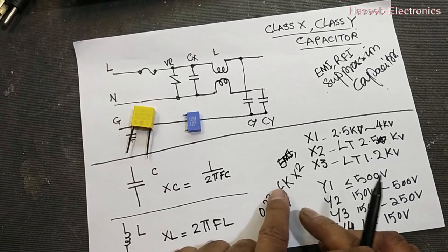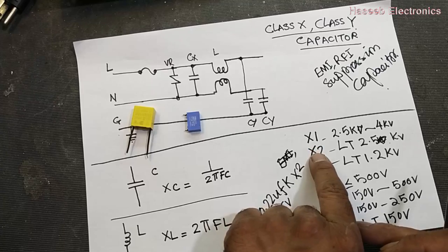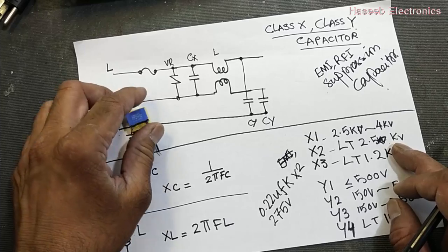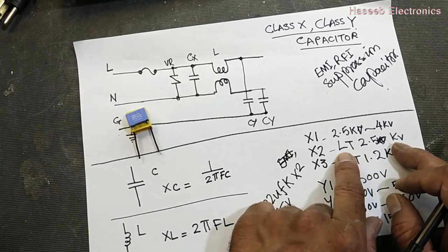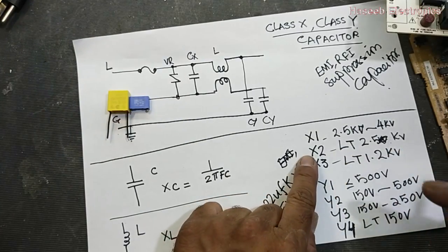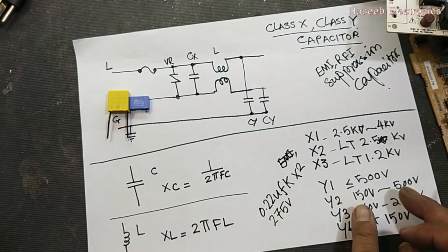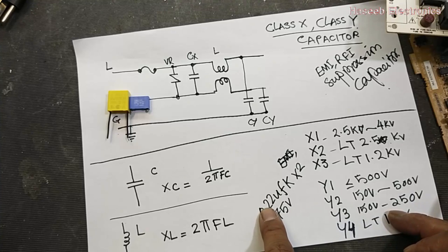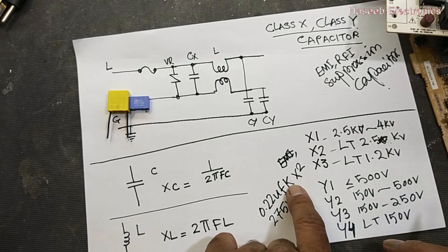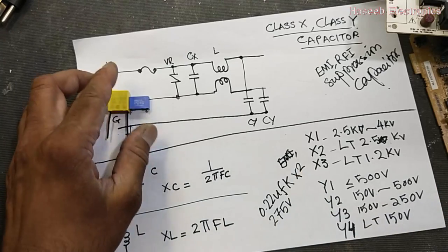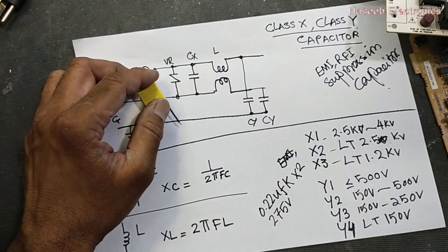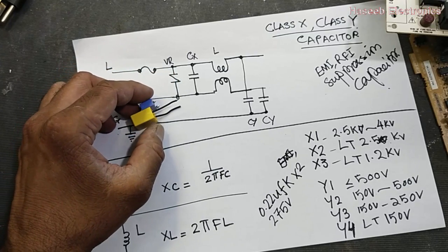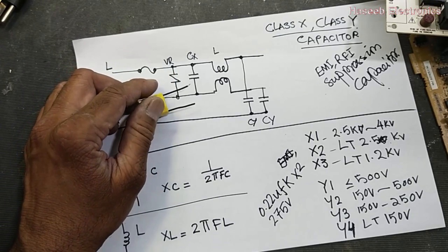So class X or class Y capacitors have a peak impulse voltage rating, capacitance, operating voltage, and tolerance category. Friends, I hope this video is informative. If it is, please hit the like button. If you have any questions, please let me know in the comment box. Thank you for watching. Assalamu alaykum wa rahmatullahi wa barakatuh.